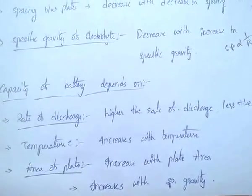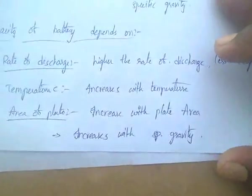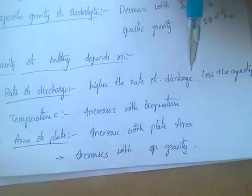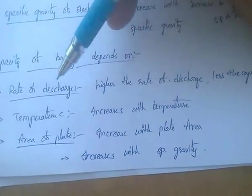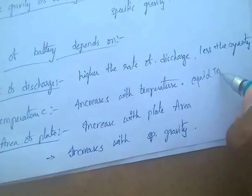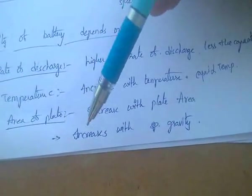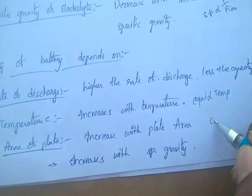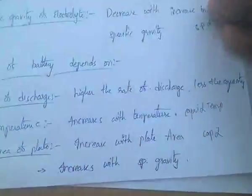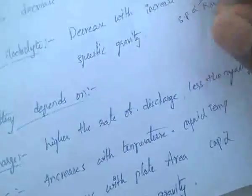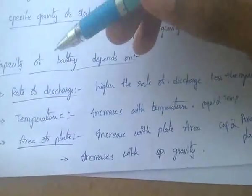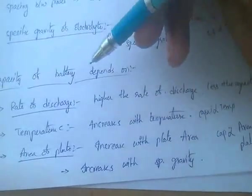Capacity of a battery depends mainly on: rate of discharge — higher the rate of discharge, less the capacity. Temperature — capacity increases with temperature, so capacity is directly proportional to temperature. Area of plates — capacity increases with plate area. Also, capacity of battery increases with specific gravity.